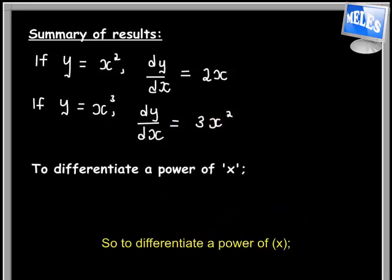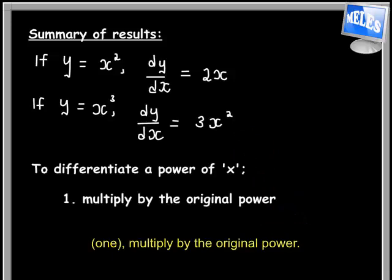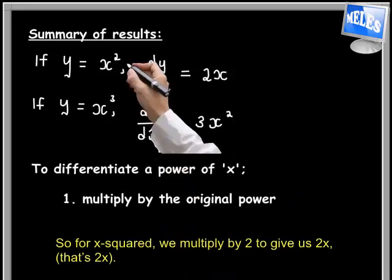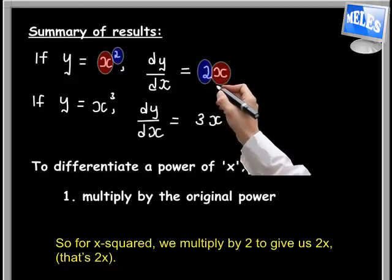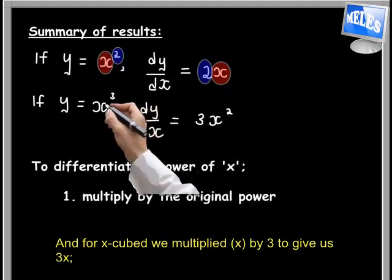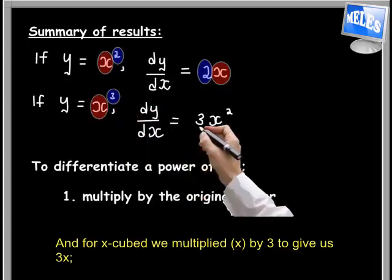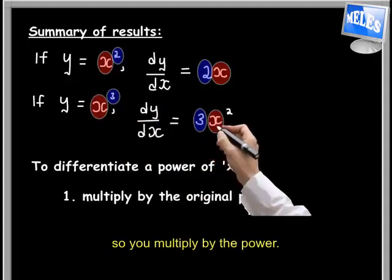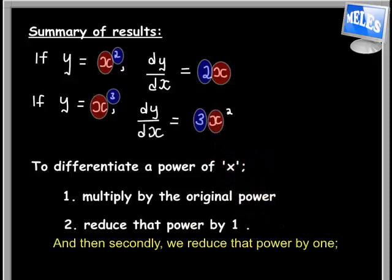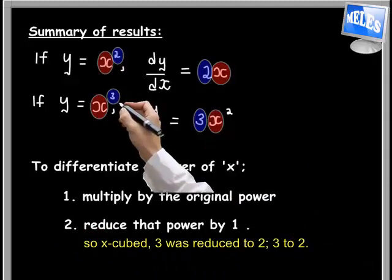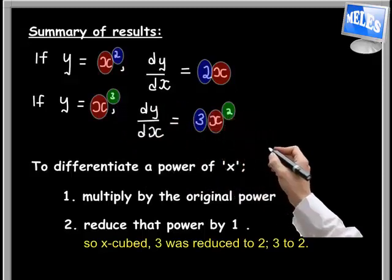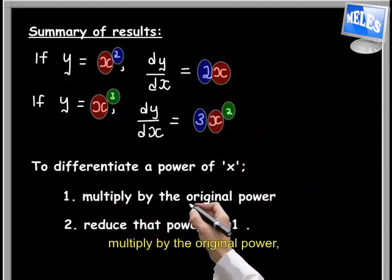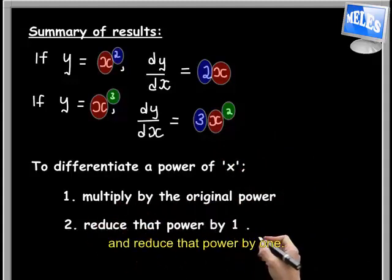So to differentiate a power of x: first, we multiply by the original power. For x squared we multiply by 2 to give us 2x, and for x cubed we multiply by 3 to give us 3x squared. Then secondly, we reduce that power by 1 — so x cubed becomes 3x squared, the power reduced from 3 to 2. In summary: to differentiate, multiply by the original power and reduce that power by 1.